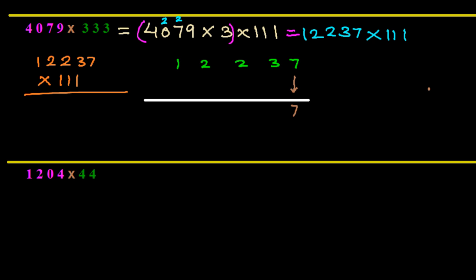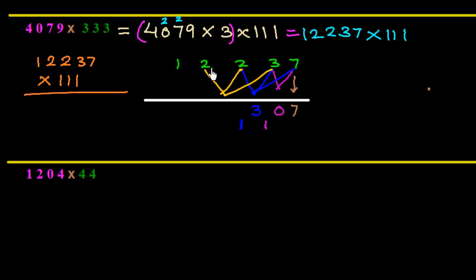We multiply 12237 × 111. First write down 7. Then 3 + 7 = 10, write 0 carry 1. Since 111 has three digits, we add a maximum of three numbers at a time: 2 + 3 + 7 = 12, plus 1 = 13, write 3 carry 1. Then 2 + 2 + 3 = 7, plus 1 = 8, write 8. Next, 1 + 2 + 2 = 5, write 5. Finally, 1 + 2 = 3, and the single remaining digit is 1.